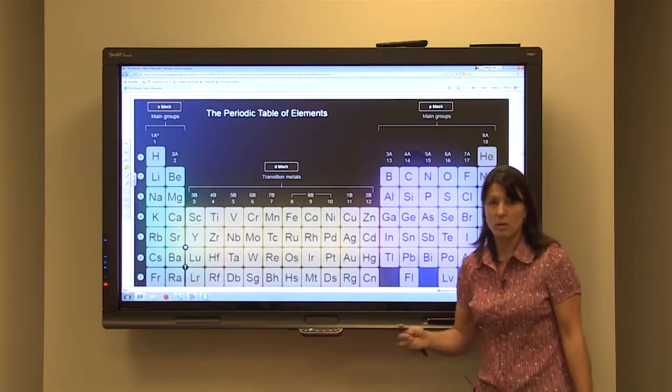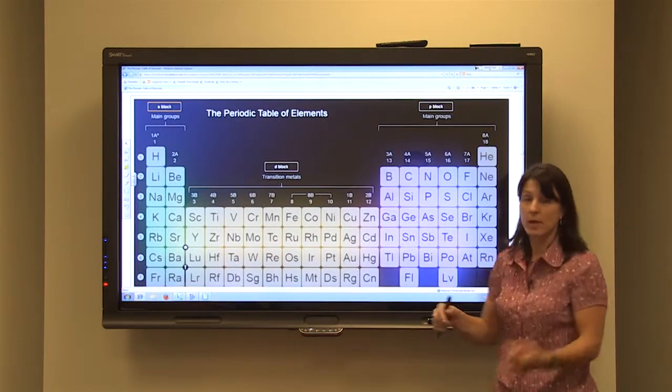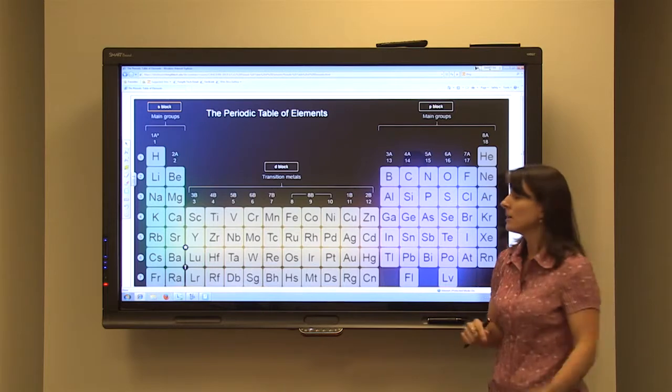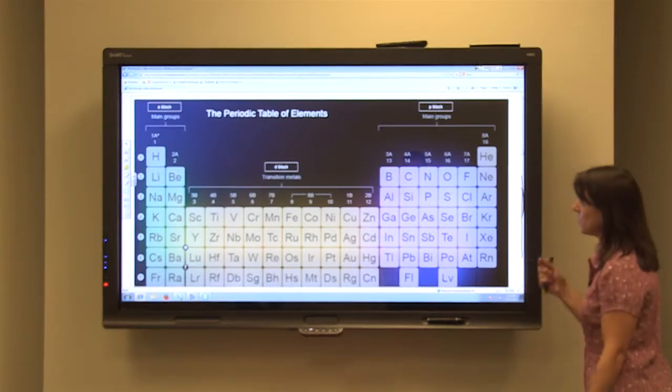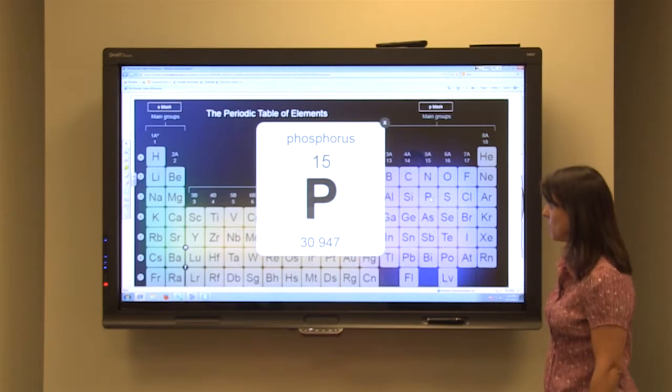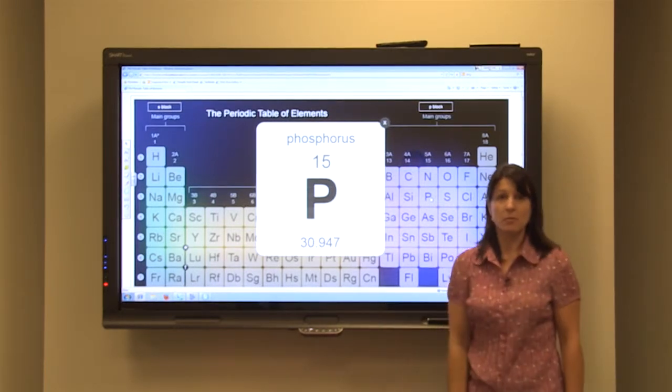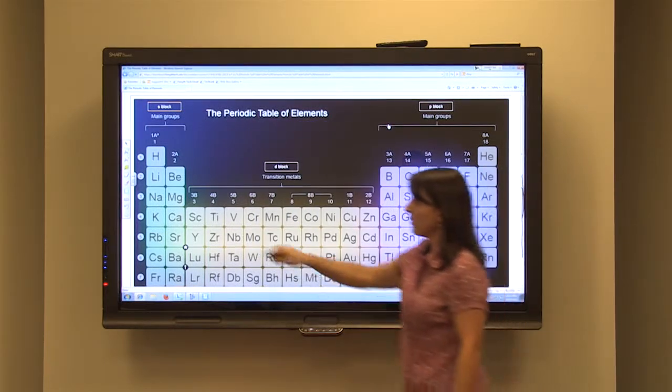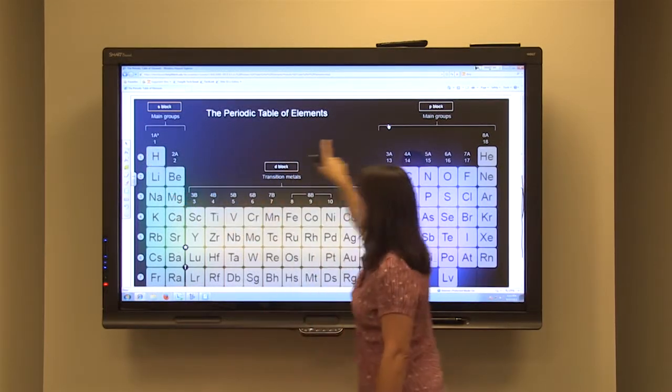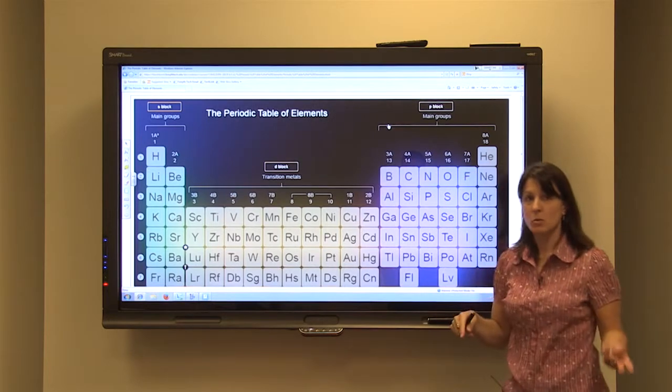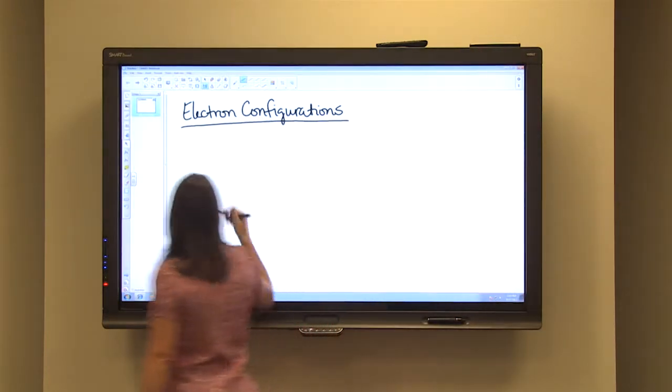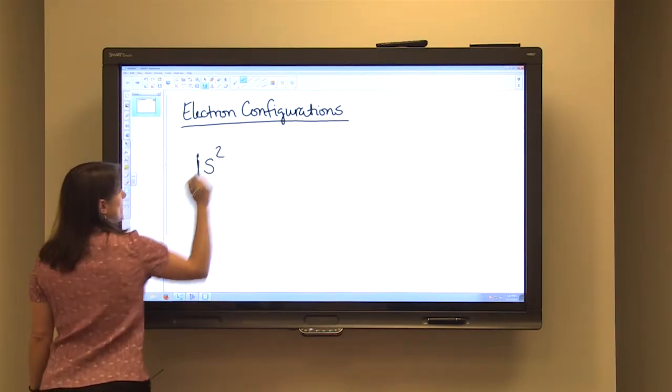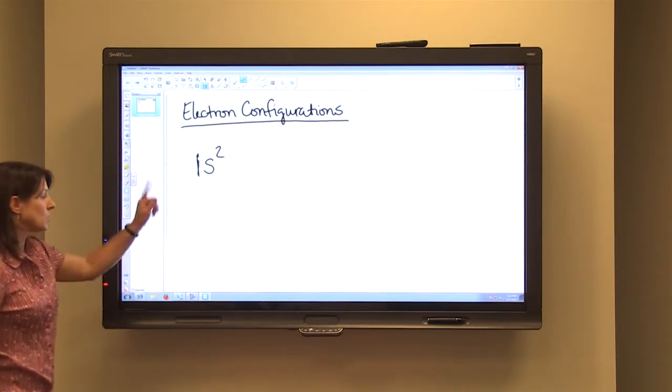To organize our electrons into an electron configuration, we have to include the energy level, the sub-level designation, and the number of electrons that are in each sub-level. So if we pick an element like phosphorus, phosphorus has a total of 15 electrons that we need to organize. We have to start in level one. Level one has an S-sub-level that can hold two electrons. So our first level and sub-level will be 1s² because it holds two electrons.